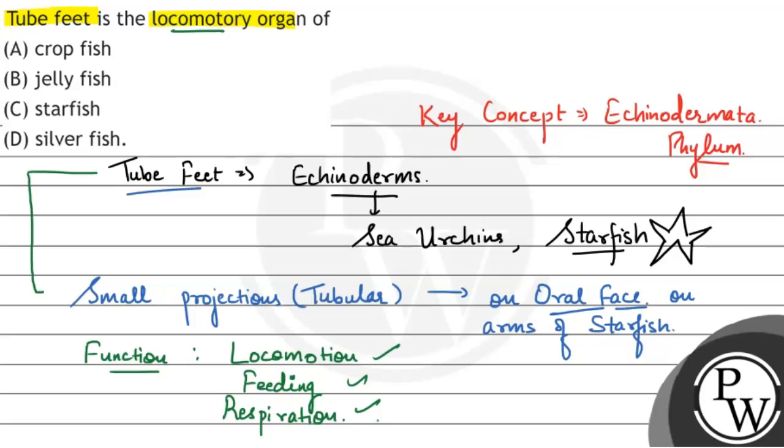What are tube feet? These are small tubular projections present on the oral face of arms of starfish. And the function is locomotion, feeding and respiration.